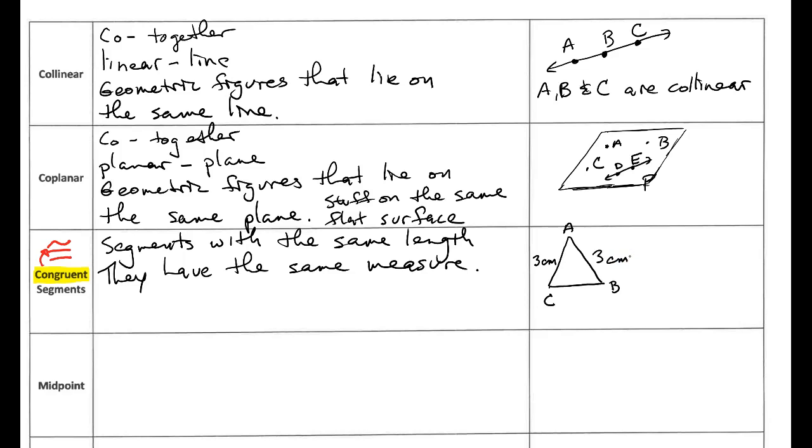So I can say that segment AB, there's my segment symbol. Remember that's very important. We're never going to have two letters without a symbol above it unless we're talking about the measures of the segments.